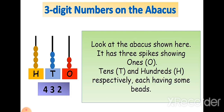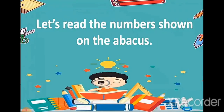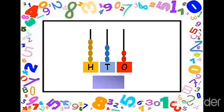Now let's learn how to read the numbers shown on the abacus. Look here. Here is the abacus. Can you see the spikes? Can you see the beads? In the abacus shown here, there are two beads in the ones spike. So we will write two in the ones place.